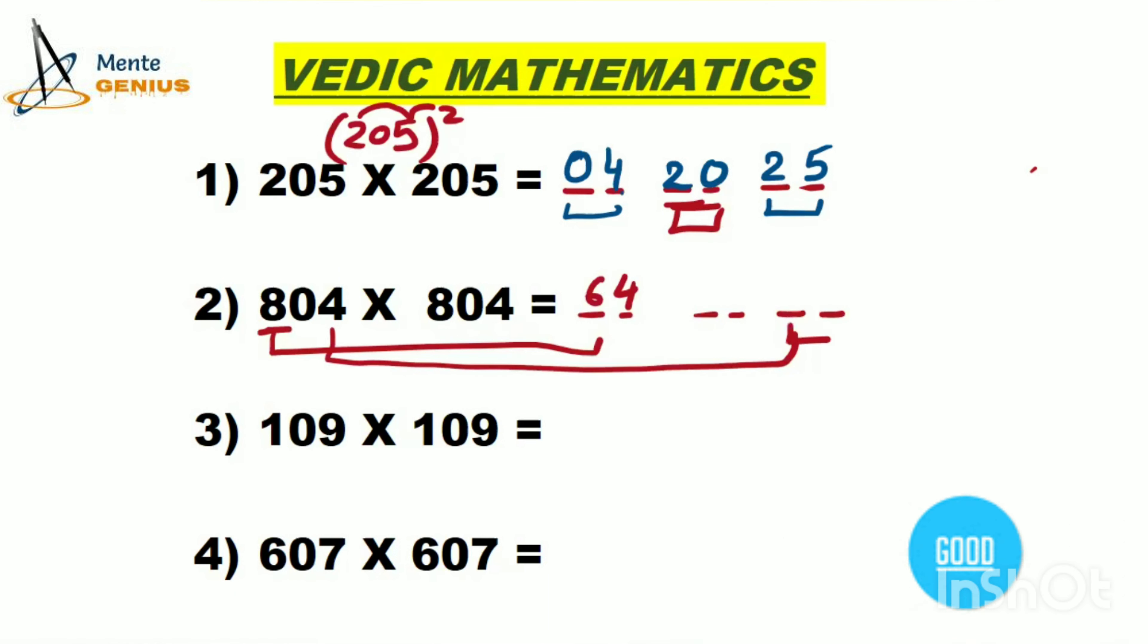For the last two digits, square 4. 4 squared is 16. Now for the middle, multiply 8 and 4, which is 32. Double it to get 64. This gives us 646416 for 804 times 804.